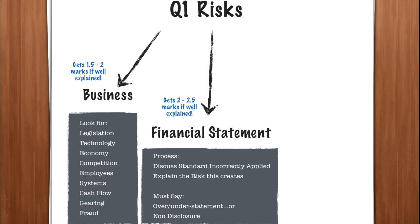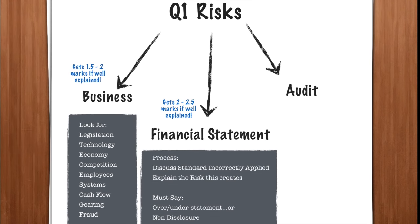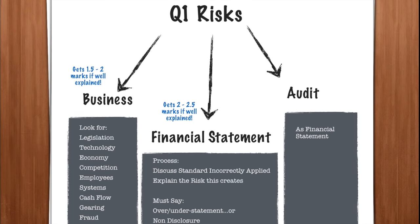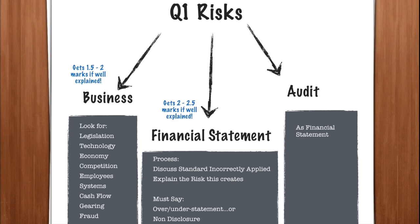So far we've got business risks and financial statement risks. The last one we could be asked for is audit risk. Audit risk will basically be the same as financial statement risk — it's the risk that there is a misstatement in the financial statements that the auditor does not detect. A standard may have been incorrectly applied, creating an audit risk because the auditor may not detect it. You'd still have to identify what the standard was and what the over or understatement or non-disclosure was, going through the same process as for financial statement risks.